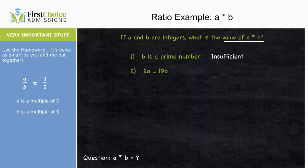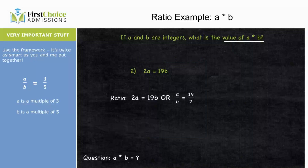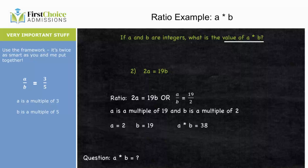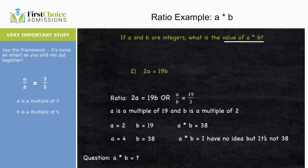Statement 2 gives us 2a equals 19b. In number properties, it's most useful to convert this to a ratio: a over b equals 19 over 2, so a is a multiple of 19 and b is a multiple of 2. But we can't pin down a×b — for example, a=2 and b=19 gives a×b=38, but a=4 and b=38 is also valid and gives a different product. Insufficient.